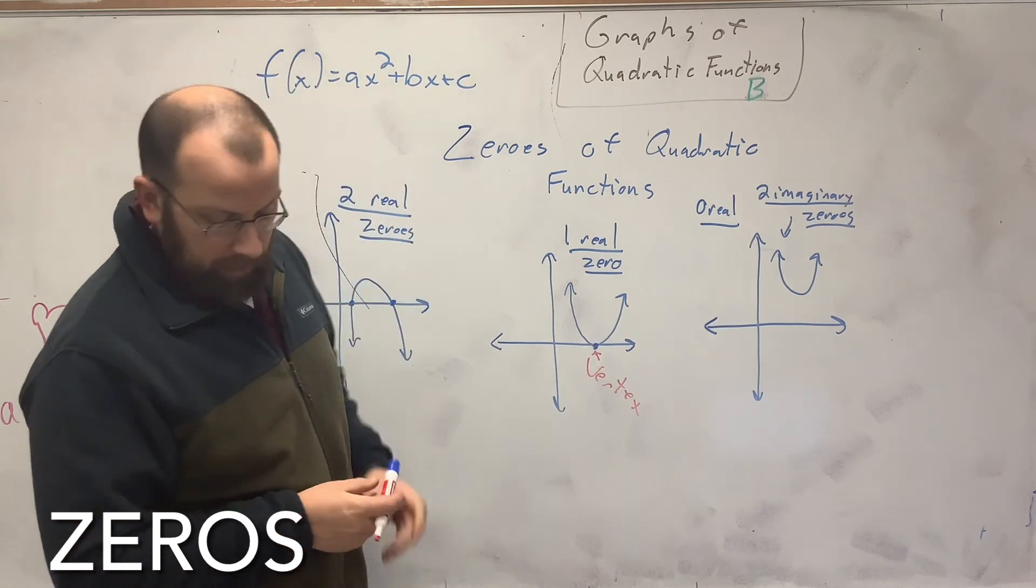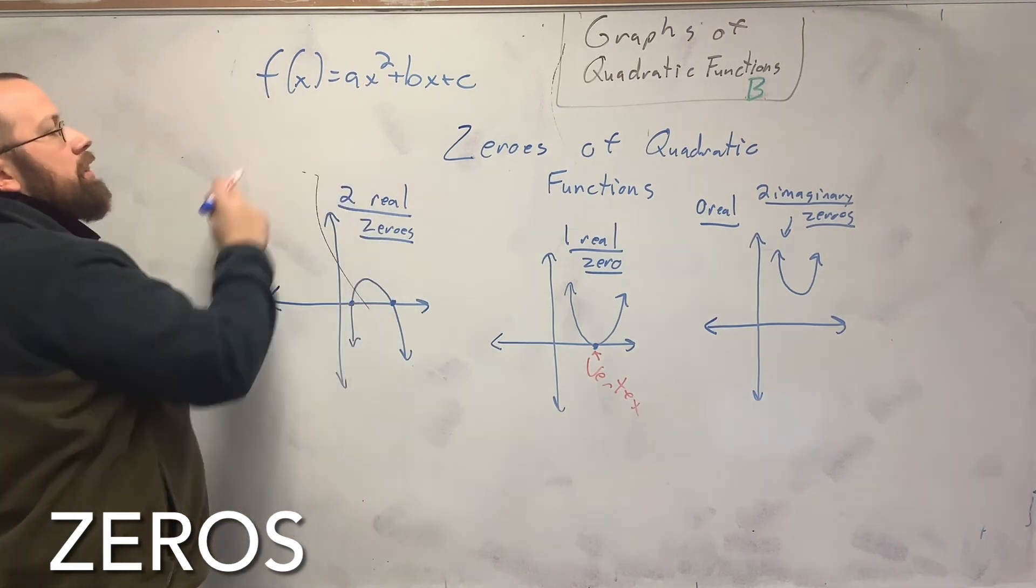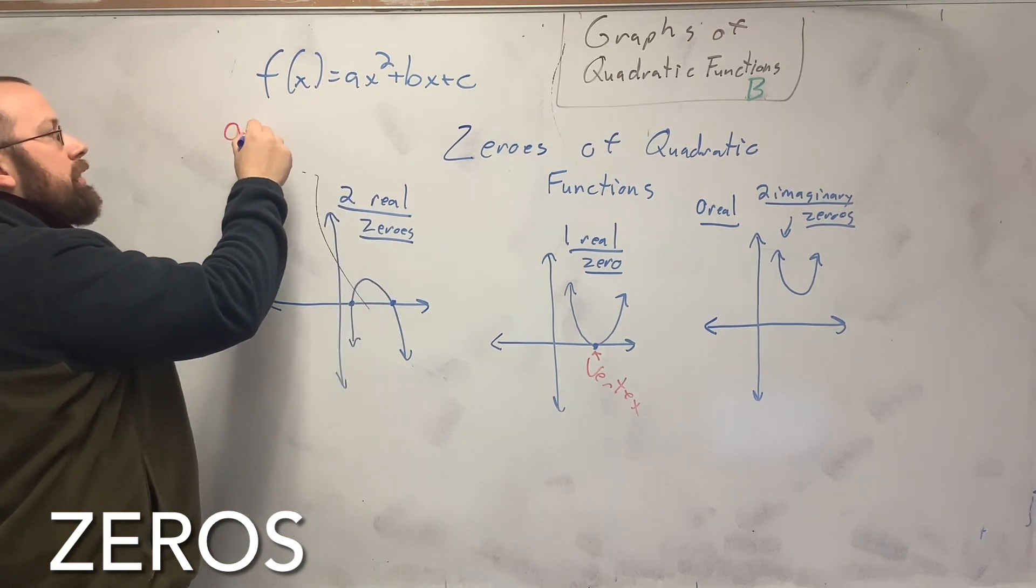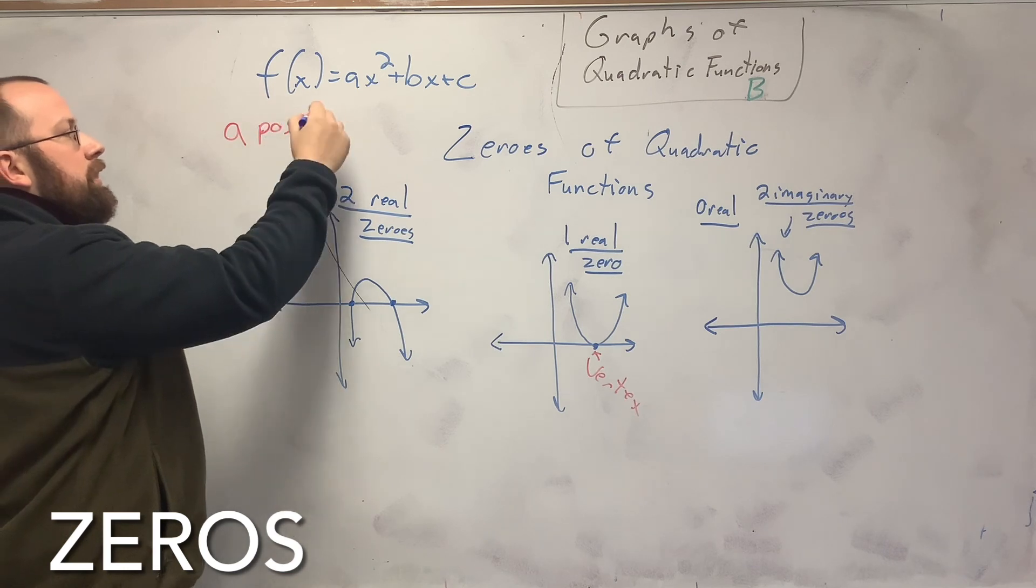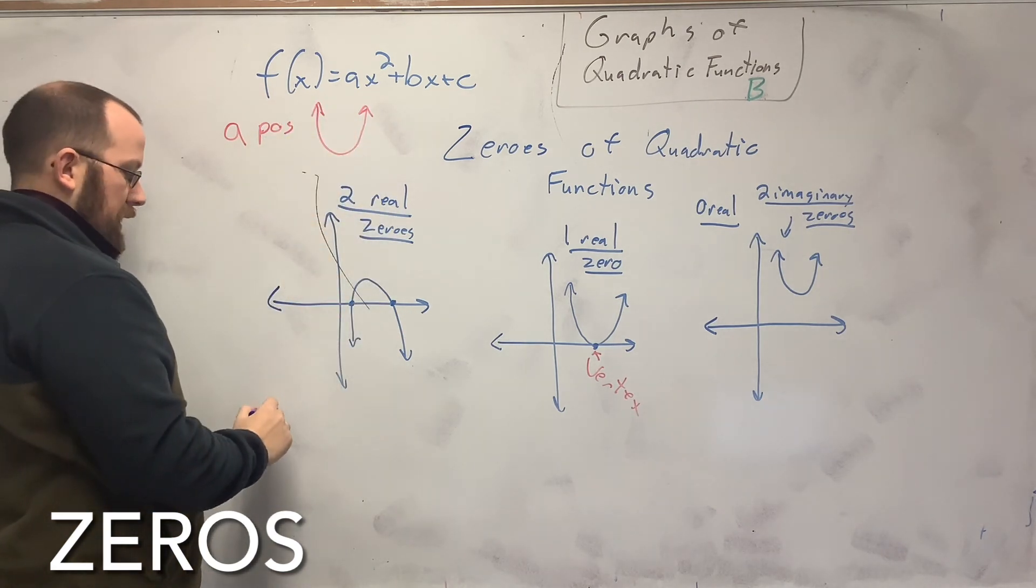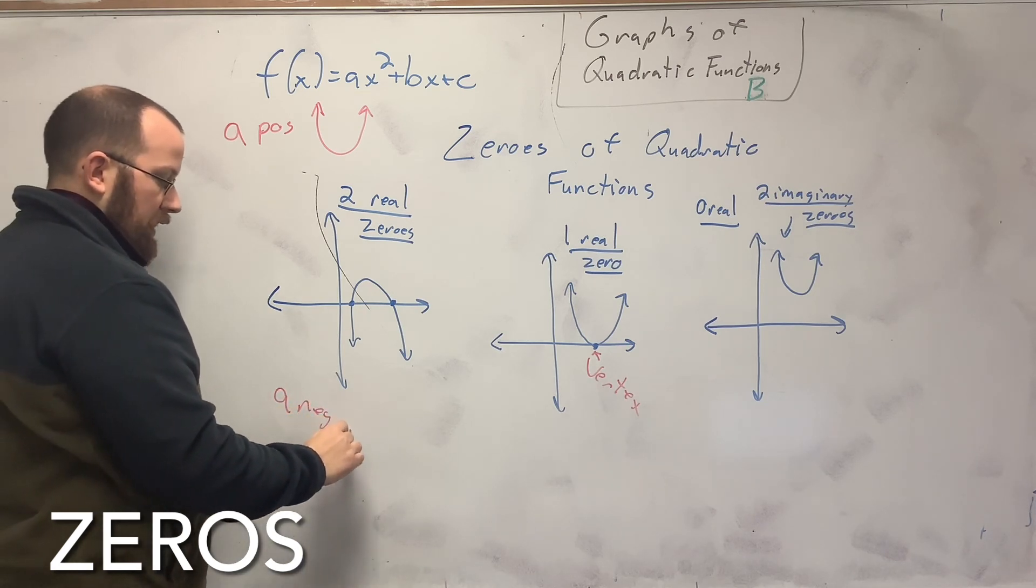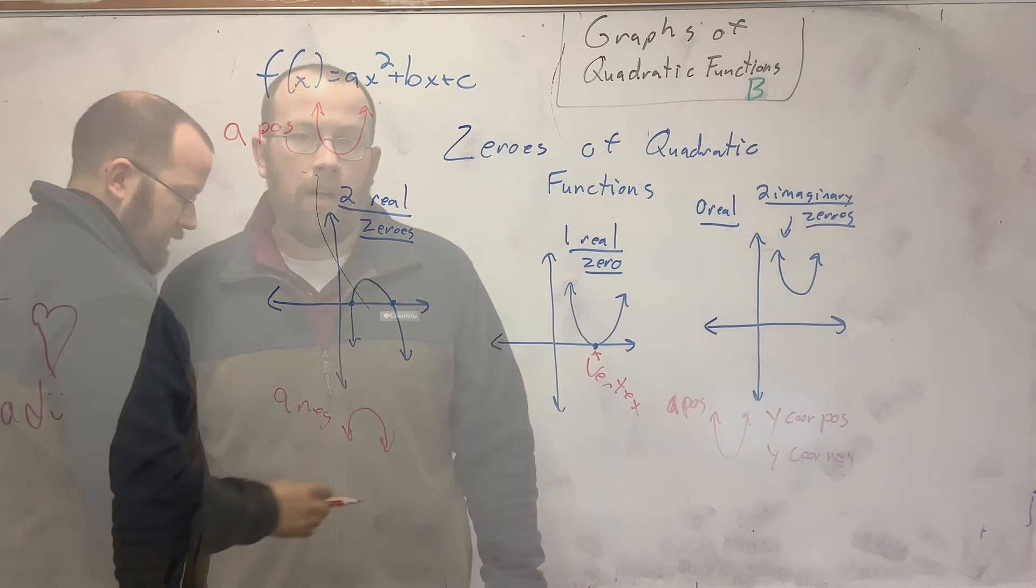So the other thing you need to know, when this is our standard form, f(x) = ax² + bx + c. When A is positive, you're going to have a smiley face. When A is negative, you're going to have a frowny face.